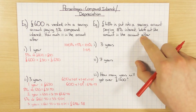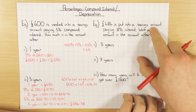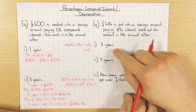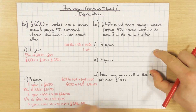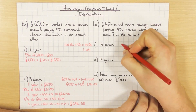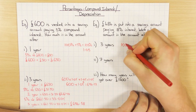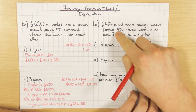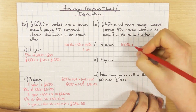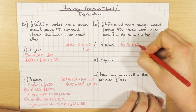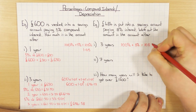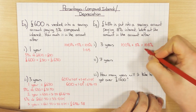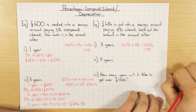Let's have a go at this one. £484 is put into a savings account paying 8% compound interest. Work out the amount after three years and seven years. I'm going to use the decimal multiplier. I start off with 100%, which is my 484. I'm increasing by 8% because it's interest, so 100% plus 8% gives me 108%. Converting to a decimal by dividing by 100 gives me 1.08. That's my decimal multiplier.